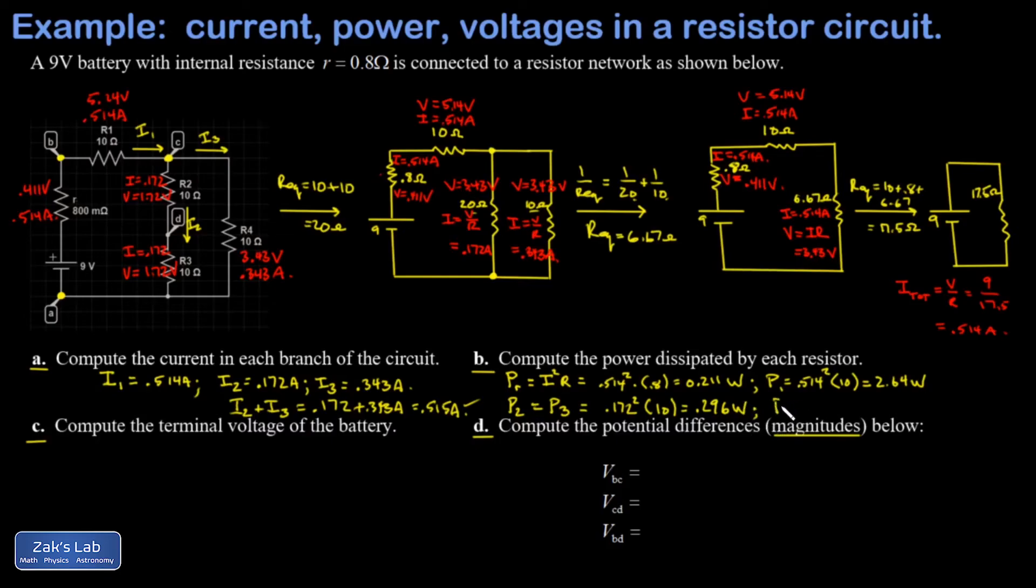And finally, I get P4 is I²R, that's 0.343 squared times 10 ohms. And I get 1.18 watts.